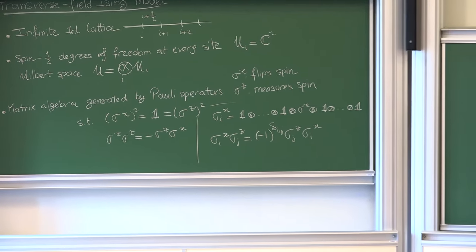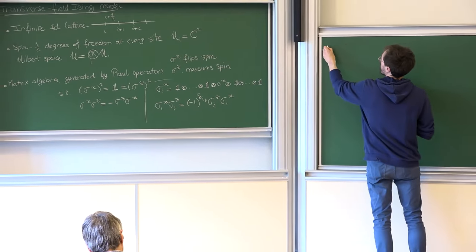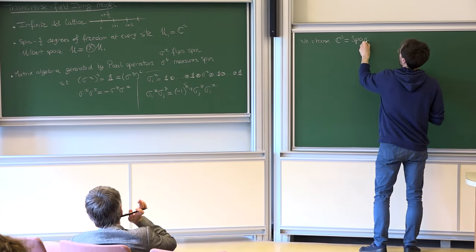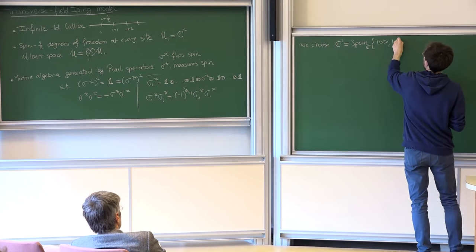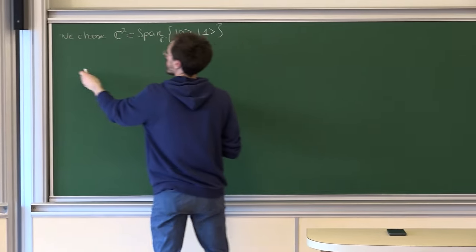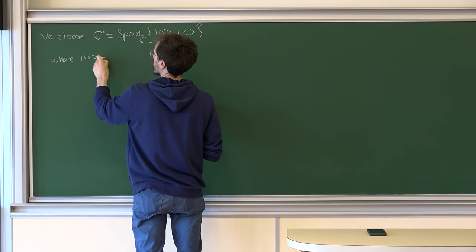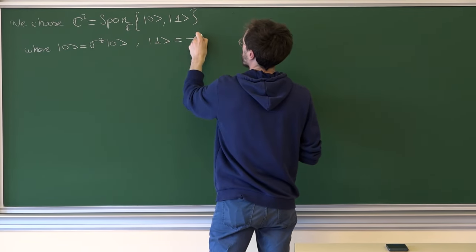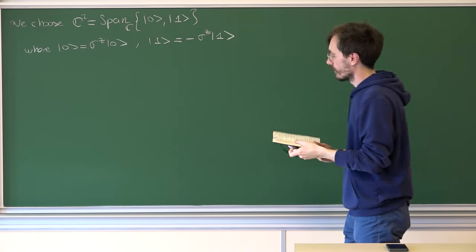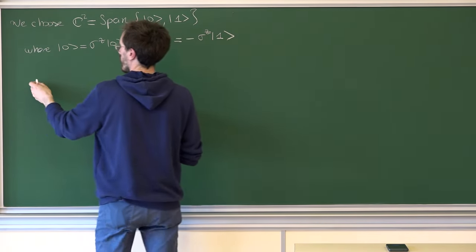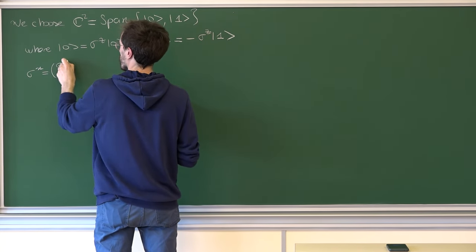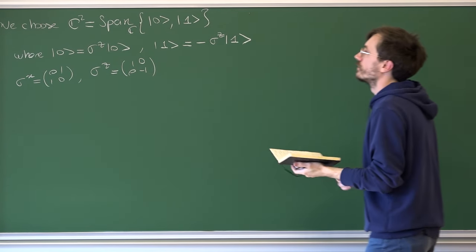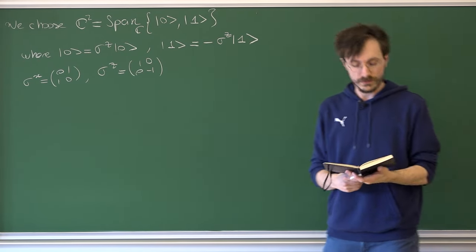I choose ℂ² to be the span of basis vectors labeled by |0⟩ and |1⟩, where |0⟩ is the +1 eigenstate of σᶻ and |1⟩ is the −1 eigenstate. In this basis, σˣ reads as the off-diagonal matrix, and σᶻ is diag(1, −1). Unless I indicate otherwise, we will always be working in this Pauli-Z basis.